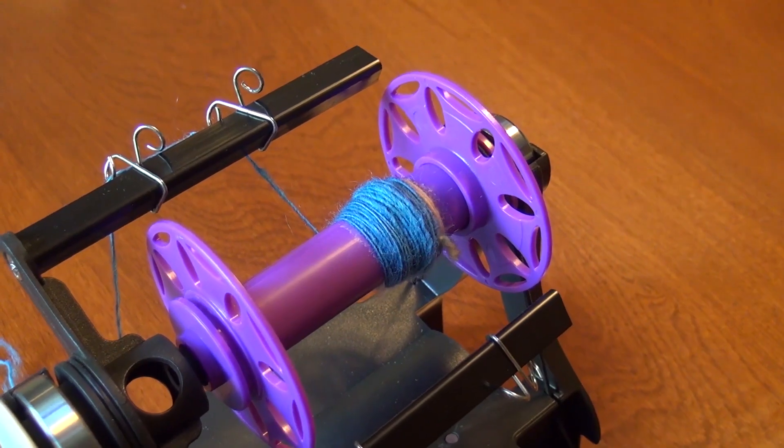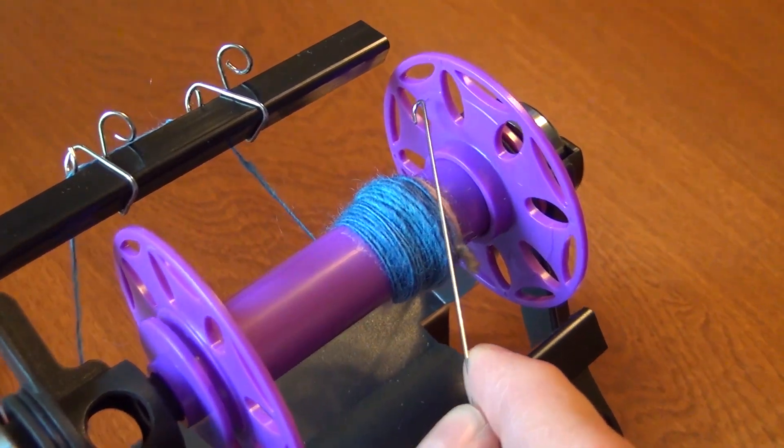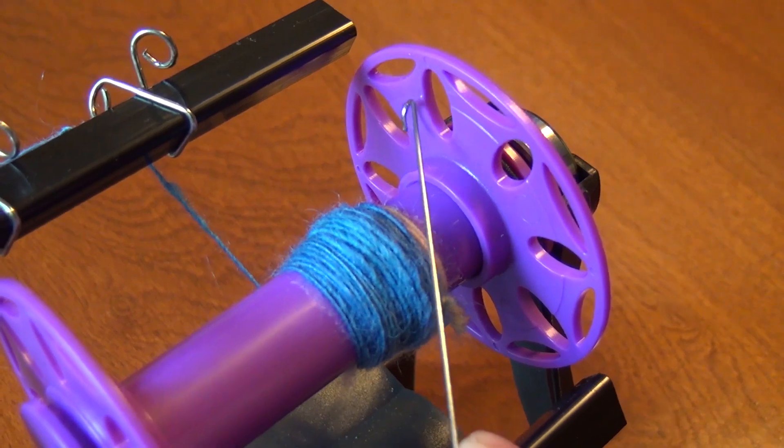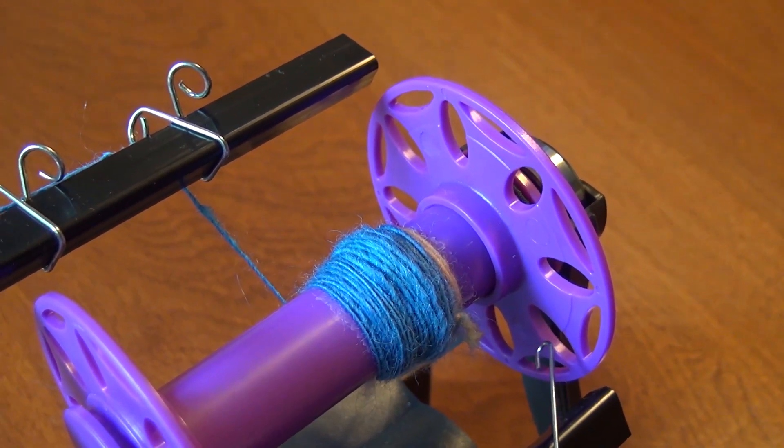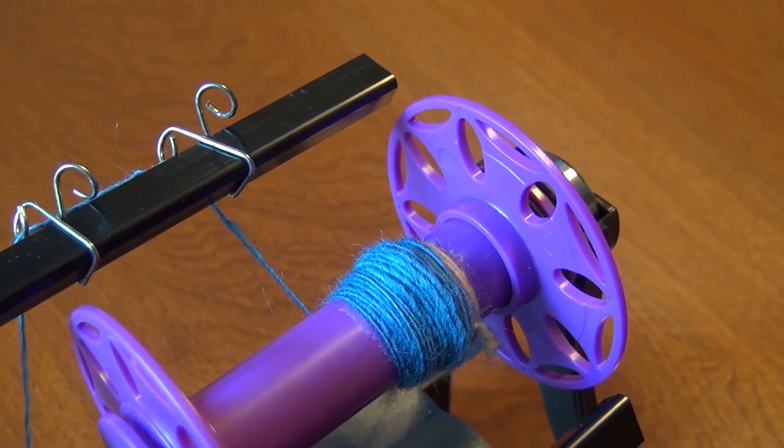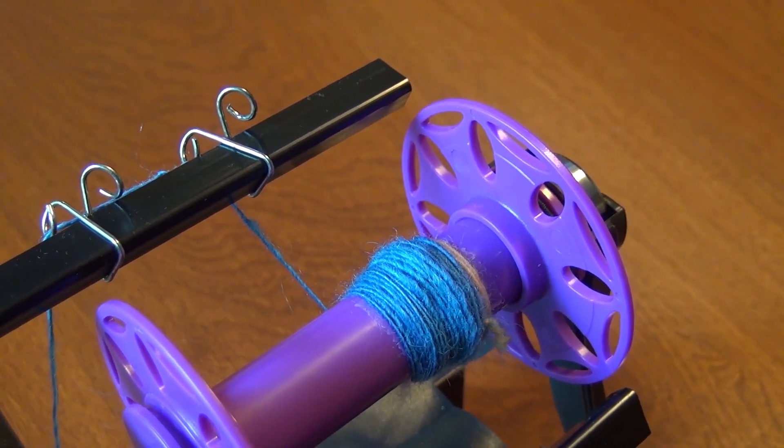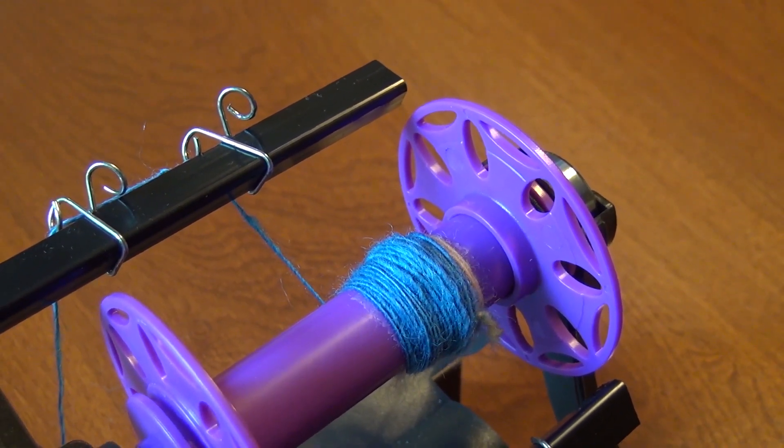When the bobbin is full it can hold about two ounces of yarn and there is this mark on the bobbin to show when the bobbin is half full. We will talk about plying in a little bit, but in that process you will combine two or more bobbins. So if you fill these bobbins only halfway then you will find that all of your singles fit onto a single plied bobbin.